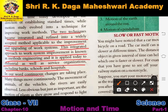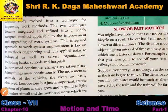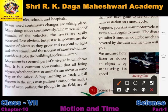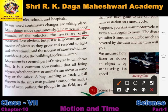In our world, continuous changes are taking place. Nothing in our world is stationary — even the Earth is not still; it continuously rotates on its axis and revolves around the sun. Nothing is permanent; everything keeps changing whether its state, position, or anything else. Many things move continuously — the movement of animals, vehicles, and rivers are easily observed around us, and all are examples of motion.